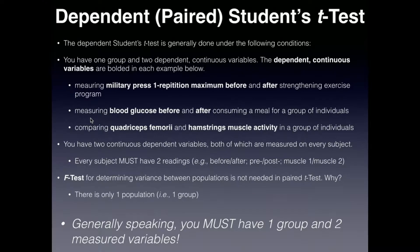Here's another example: you measure blood glucose before and after consuming a meal for a group of individuals. Just pick one person from that group — you're measuring their blood glucose before the meal and blood glucose after the meal. You'd probably expect the blood glucose to go up. For the last example, compare quadricep femoris muscle activity and hamstrings muscle activity in a group of individuals. I've actually done this test in a biomechanics lab I teach — we did it last week. I'm measuring two things on every person: their quadricep activity and their hamstring activity — two variables measured on each person in the group.